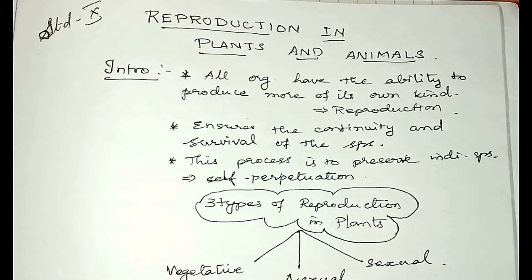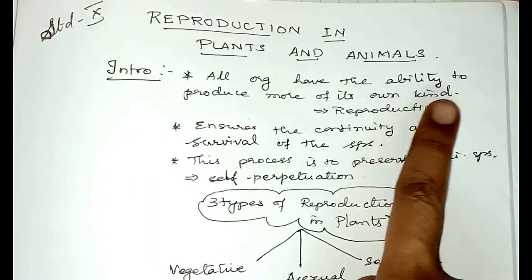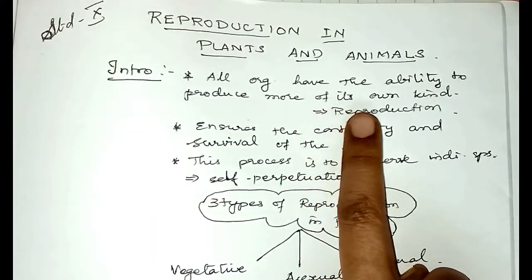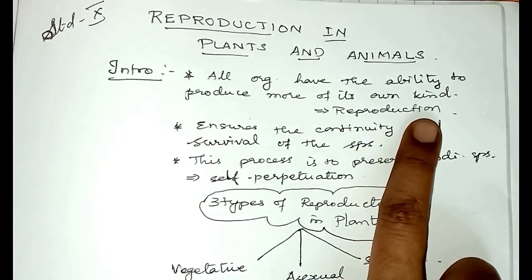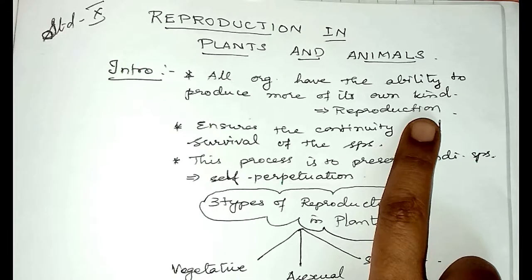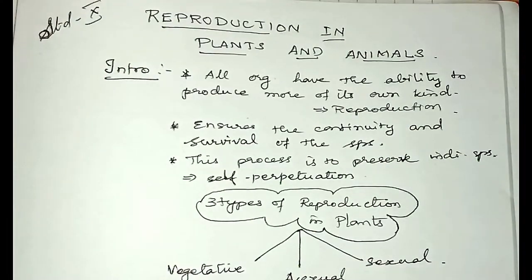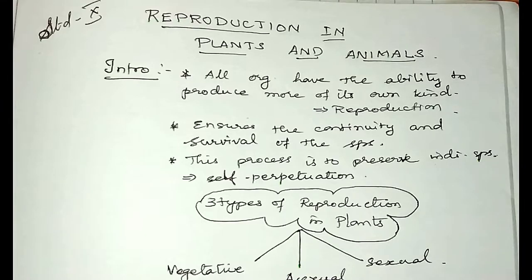Reproduction in plants and animals — introduction. All organisms have the ability to produce more of their own kind, and this is called reproduction. Every organism, from micro-organisms like bacteria, protozoans, and viruses, to very large organisms like tall trees in the forest, are able to produce more of their own kind. This process is called reproduction.